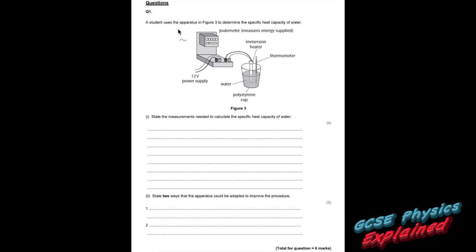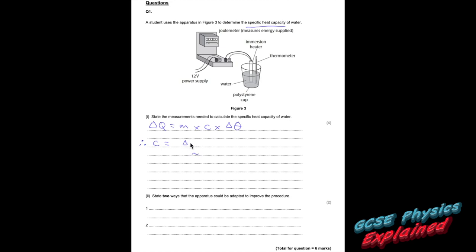Question one. A student uses the apparatus in figure 3 to determine the specific heat capacity of water. State the measurements needed to calculate the specific heat capacity of water. I always base my explanation on the calculation. The calculation for specific heat capacity is: change in heat energy equals mass times specific heat capacity times change in temperature. Rearranging, C equals the change in heat energy divided by mass times change in temperature.